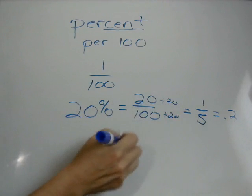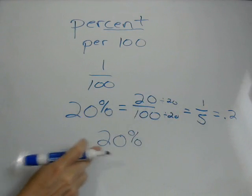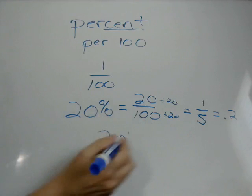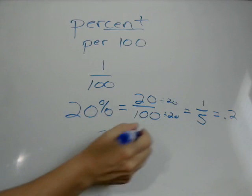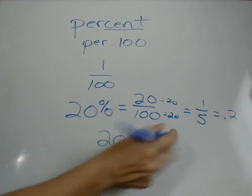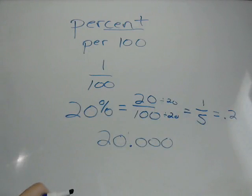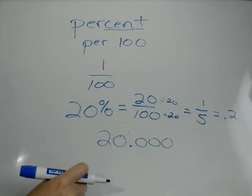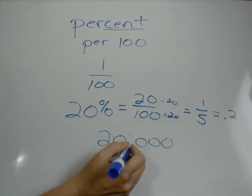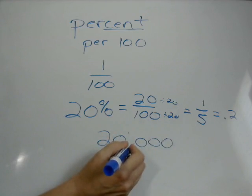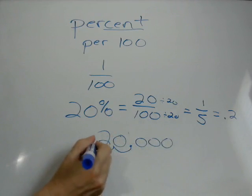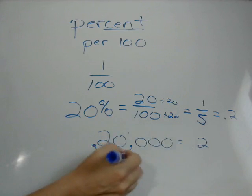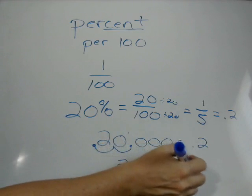So 20%, we just look at the number of that. So we just look at 20. 20 is really, the decimal point is there, because really it's 20 with .000 onto infinity. To make 20% into a decimal, you just move the decimal point to the left two places. One, two. So now, we have .2. So 20% equals .2.